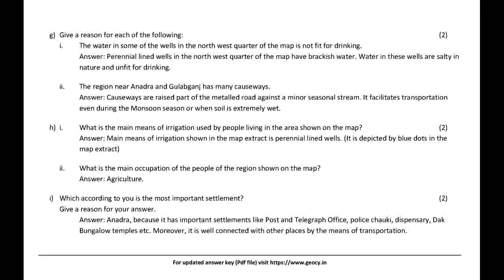Give a reason: The water in some of the wells in the northwest quarter of the map is not fit for drinking. Answer: Perennial lined wells in the northwest quarter of the map have brackish water; the water in these wells is salty in nature and unfit for drinking.